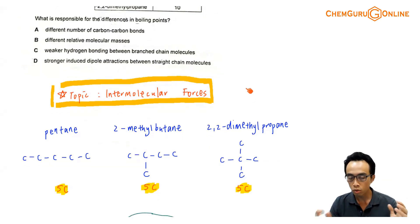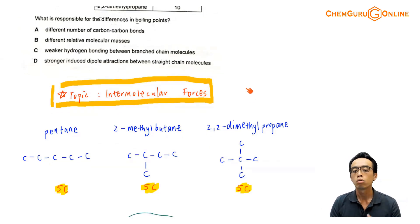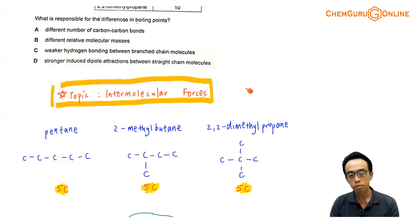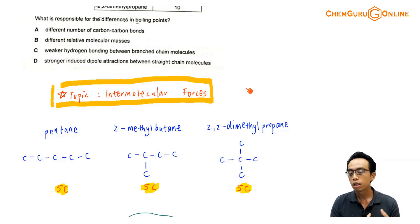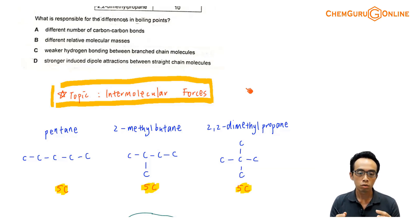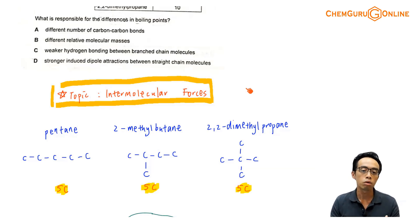We need to look at the structure of pentane, 2-methylbutane, and 2,2-dimethylpropane, and see the differences between them. We know that there are a few different types of intermolecular forces: ID-ID, PD-PD, and hydrogen bonds. The first thing we have to do is identify the dominant type of intermolecular force for each of these simple molecules.